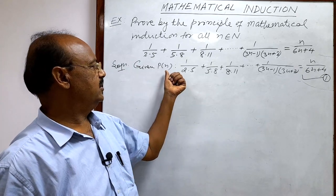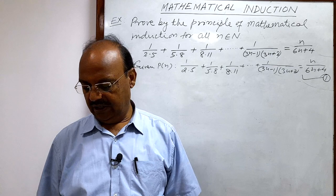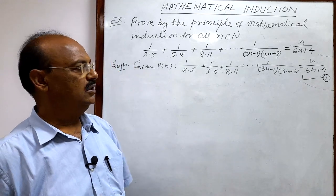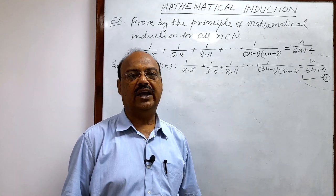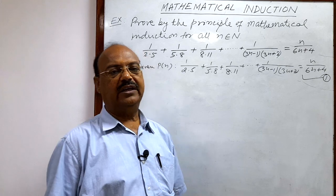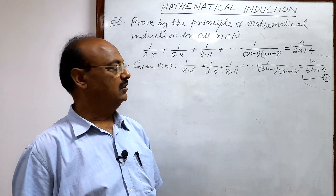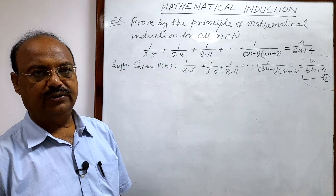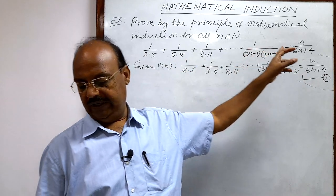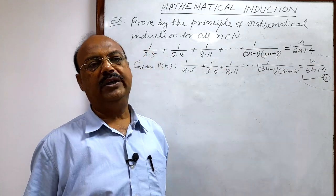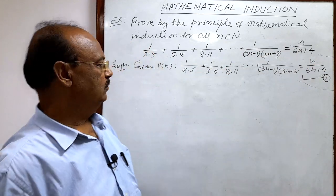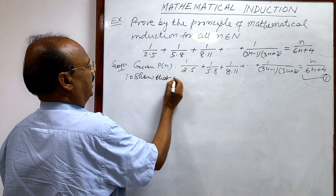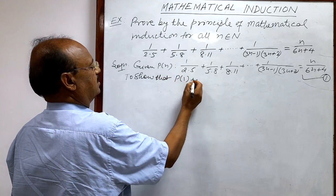We will solve this in three steps, as discussed in previous videos on the same chapter. First, we show that P(n) is true for n = 1, i.e., P(1) is true. Second, we suppose the statement is true for n = r, i.e., P(r) is true. Third and last, we show that P(r+1) is true.